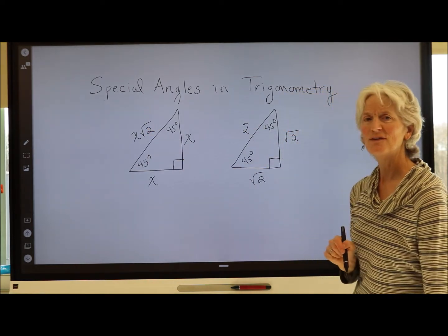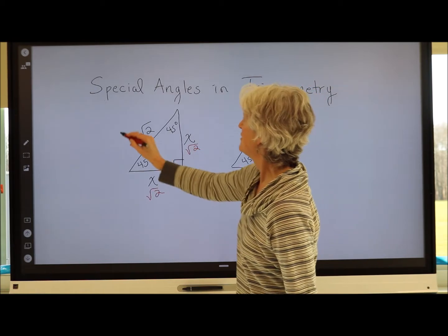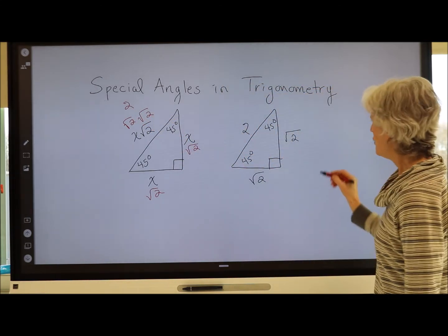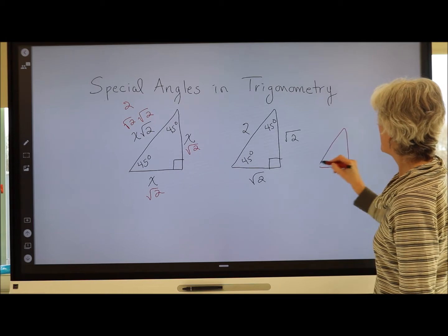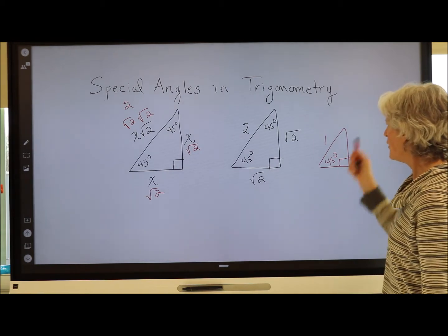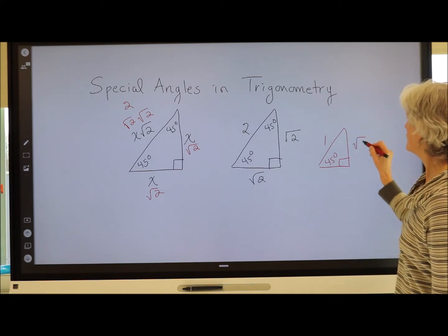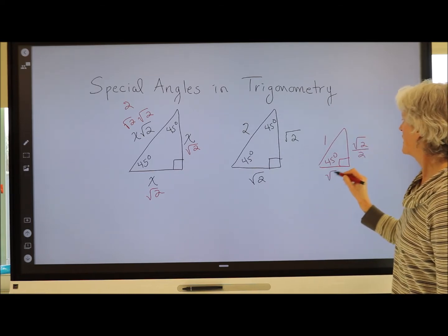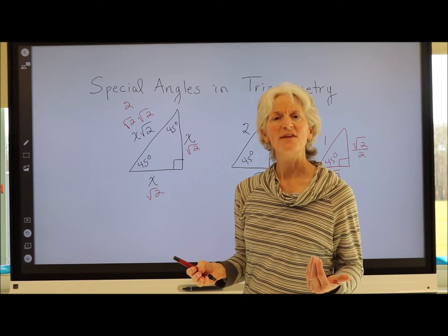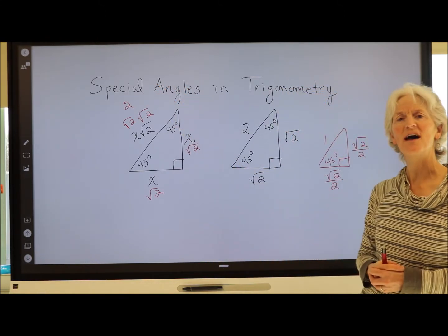If I call each leg √2, then √2 × √2 = 2, which confirms the hypotenuse. What if I had a smaller 45-45-90 triangle and the hypotenuse was 1? Those two legs would each be √2/2. So the 45-45-90 triangle can be any size, but the relationship between the sides will always be the same.